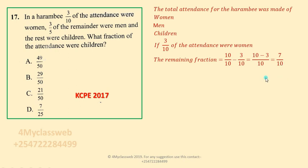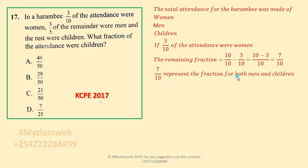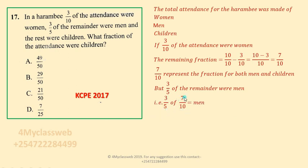7 out of 10 was the remaining fraction that accounted for men and children. Going back to the question, three fifths of the remainder were men and the rest were children. So we need to get the actual fraction for men. 7 over 10 represented the fraction for both men and children, and we are told that three fifths of the remainder were men. The remaining fraction is 7 out of 10.